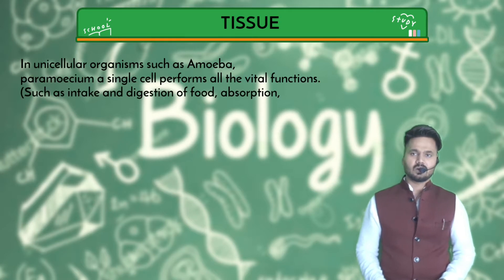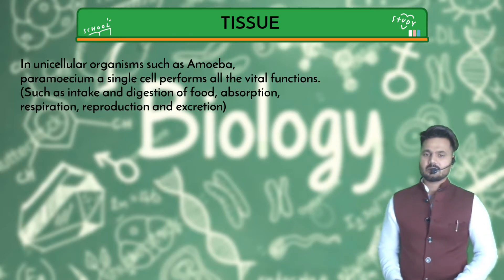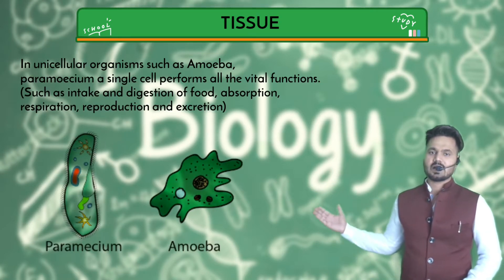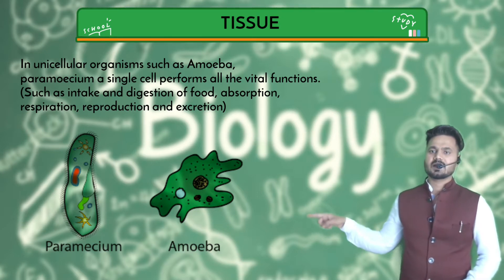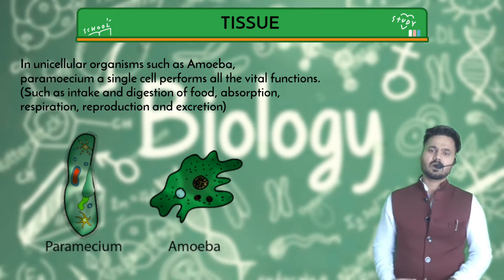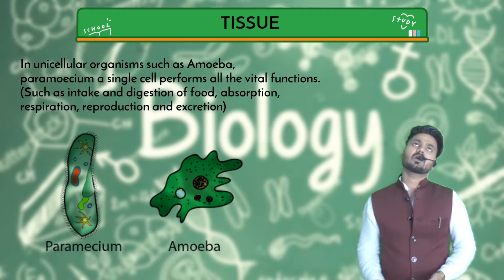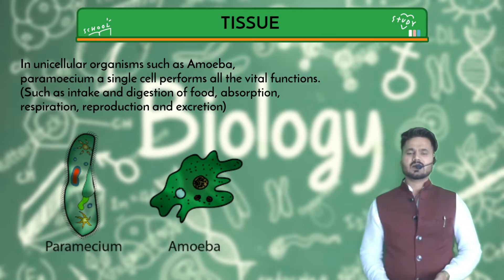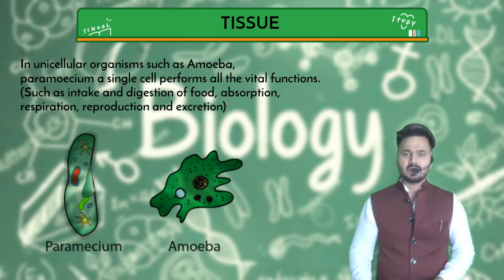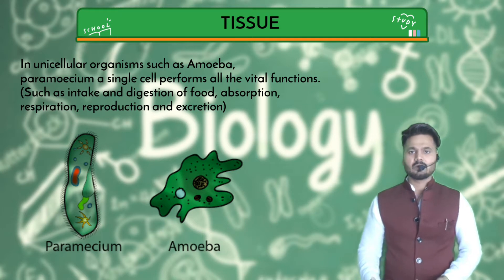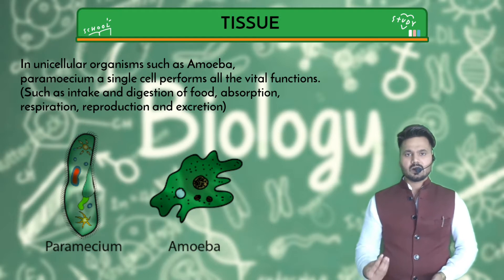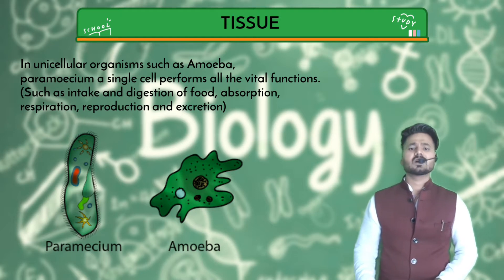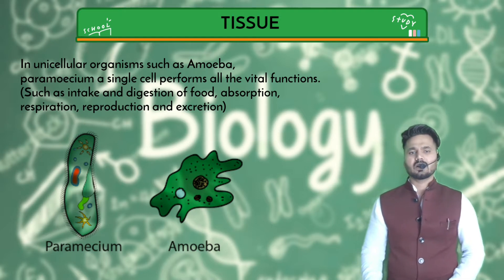First, we take unicellular organisms. As you can see, unicellular organisms like amoeba and paramecium are made up of a single cell. So one cell plays all the vital roles — for example, digestion, intake of food, absorption, respiration, reproduction, and excretion. A single cell is doing all these vital activities.